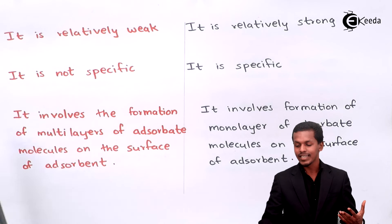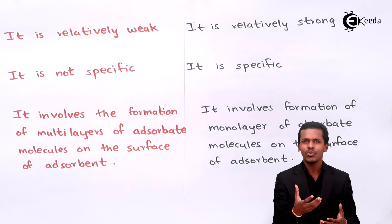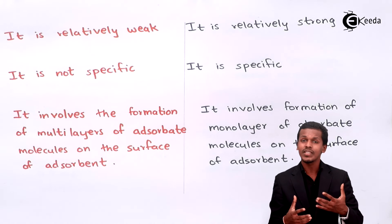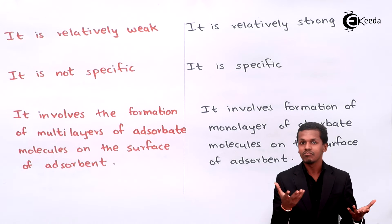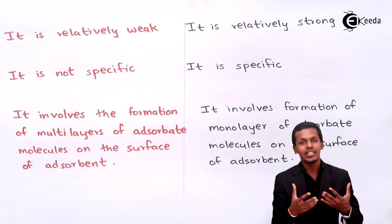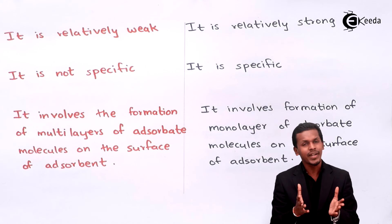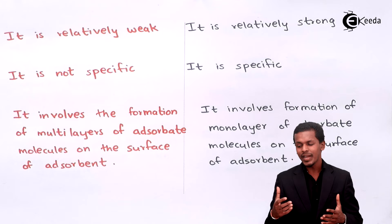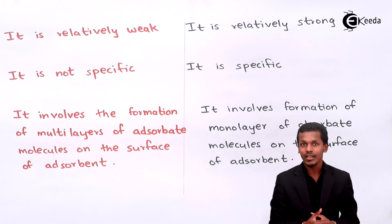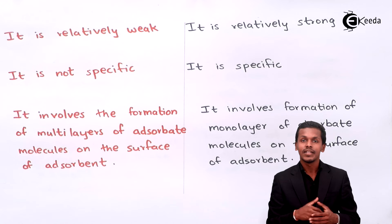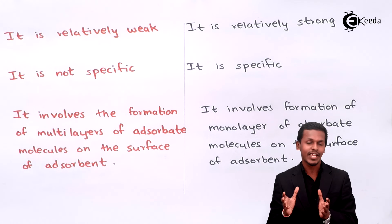The fourth point: physisorption is not specific, whereas chemisorption is very specific in nature. Physical adsorption is non-specific because depositing an adsorbate only requires Van der Waals forces or sufficient pressure — it does not depend on the identity of the adsorbate or adsorbent. Chemisorption is specific because covalent bond formation requires a certain chemical compatibility between the adsorbate and adsorbent.